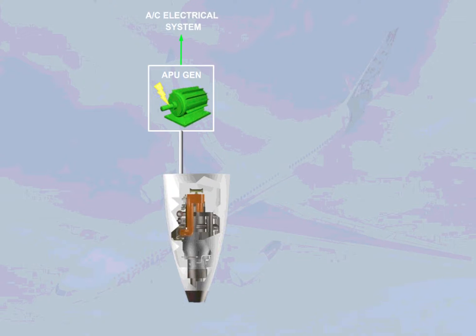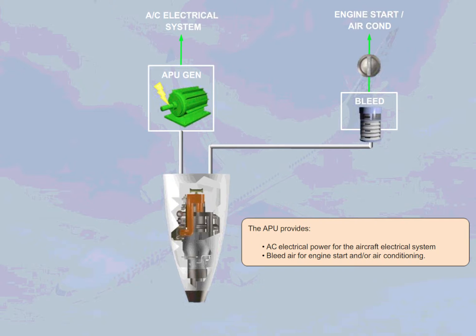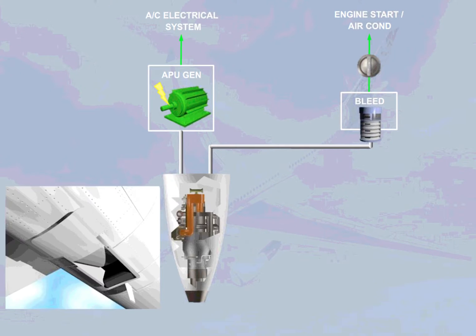The APU provides AC electrical power for the aircraft electrical system and bleed air for engine start and/or air conditioning. The APU has an electrically operated air intake flap, which, when it is opened, brings external air to its compressor inlet.